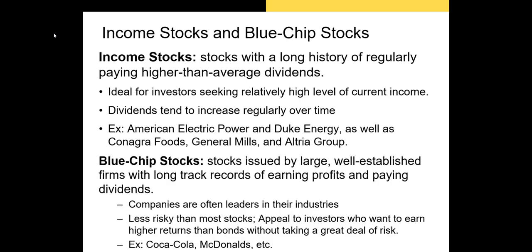So what is a blue-chip stock? A blue-chip stock is a stock issued by a large, well-established firm with a long track record of earning profits and paying dividends. The firms we think of when we think of blue-chip stocks are typically listed on the Dow Jones Industrial Average — firms like Coca-Cola, McDonald's, and Apple, which are all leaders in their respective industries.